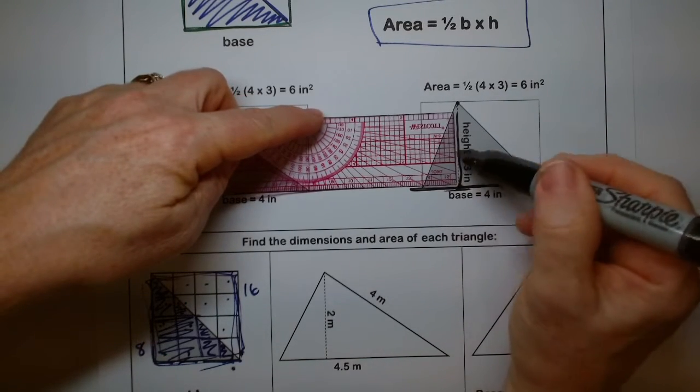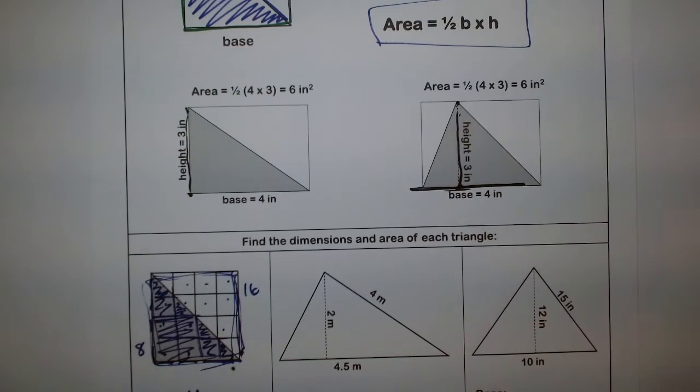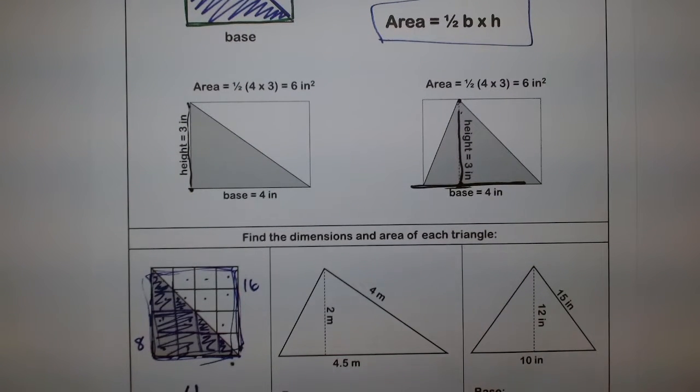So you see we have a right angle, a square angle in here. It goes straight up to the highest point of the triangle. That's probably the trickiest part.